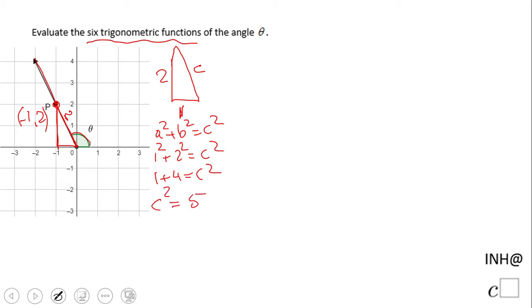And obviously c will be √5. That c in our case is what we call r for our problem. As I said before, this is r, so now we can write all six trigonometric functions.